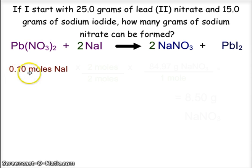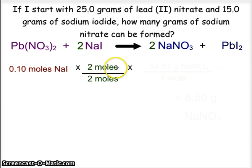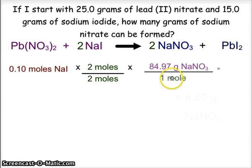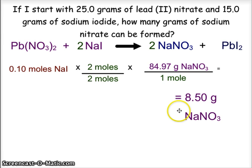Beginning with 0.10 moles of sodium iodide, we do the stoichiometry: for every 2 moles of sodium iodide, we can produce 2 moles of sodium nitrate from the balanced chemical equation. Then using the gram formula mass of sodium nitrate, we see that we can produce 8.5 grams of sodium nitrate. We use the limiting reagent to calculate how much product we can produce.